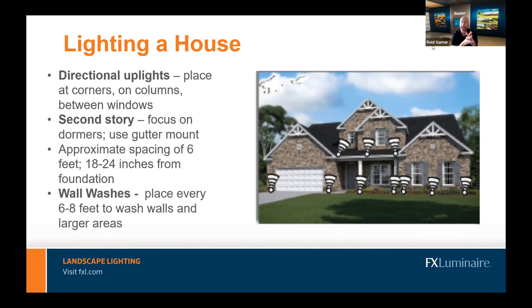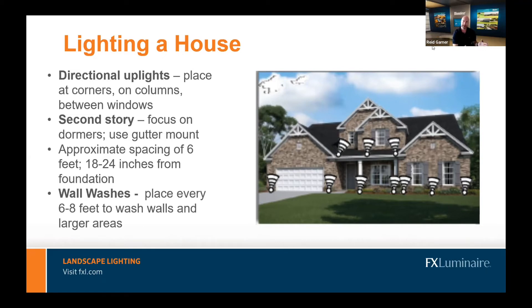If you've got mature shrubs right up against the house, you may need to prune them back a little to get space, because if you put the fixture too close to the house, it'll eat up the light beam near the fixture and you won't get much light up on the column or into the soffit. Bring it back as much as you can. For a wall wash application — if they wanted to light the side of the house that's completely brick or siding with not many windows or architectural features — place wall wash fixtures about every six to eight feet, 18–24 inches off the foundation, and that gives you a nice wash of light across that side of the house.